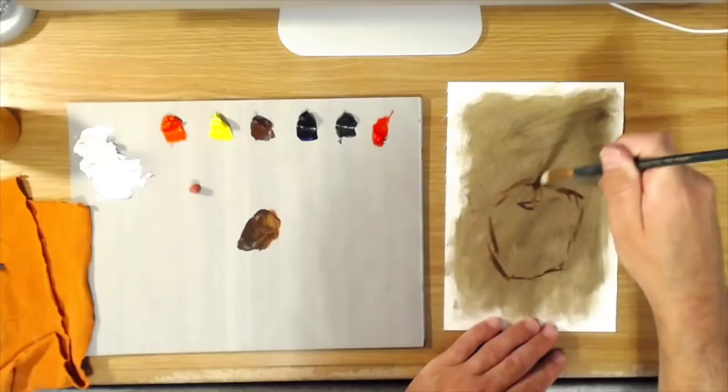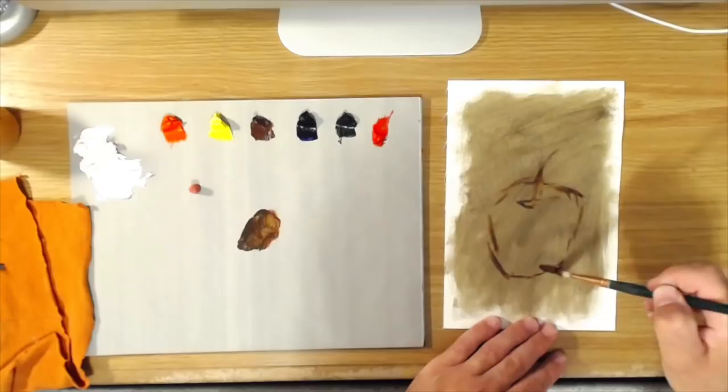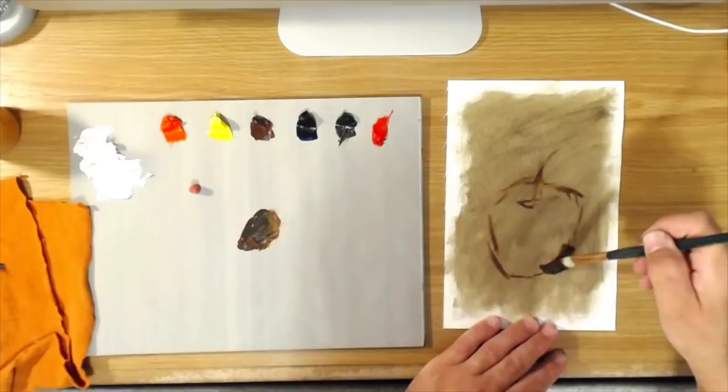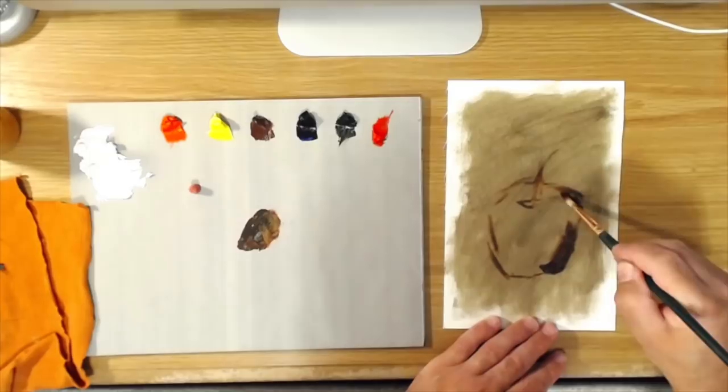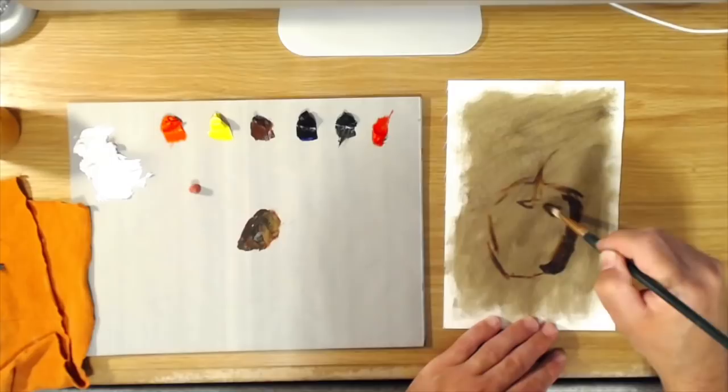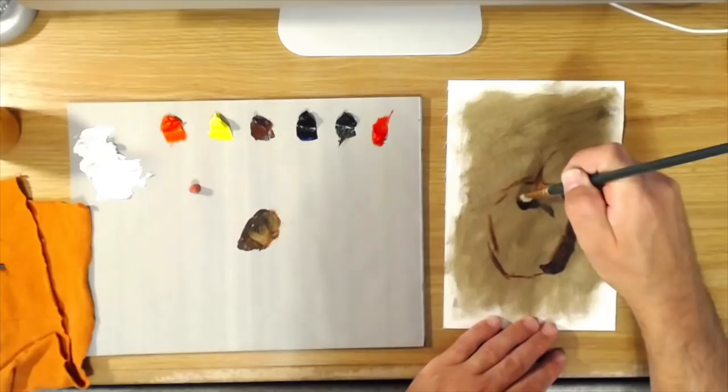Okay, so then we're going to have some shadows here. The best way, as I've said before, to paint any object in light is to always put the shadows in first.